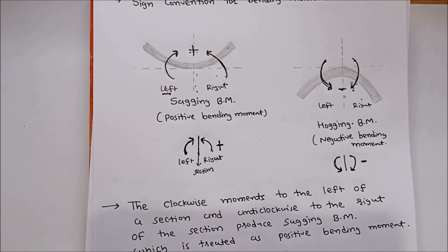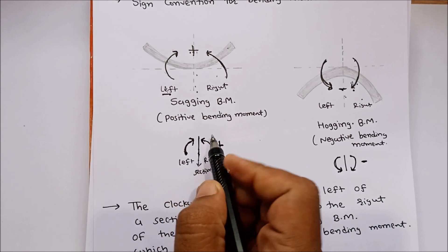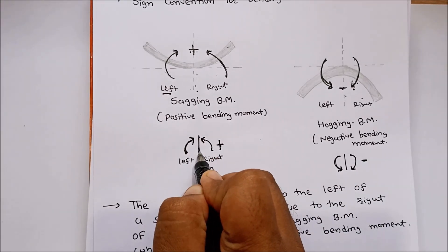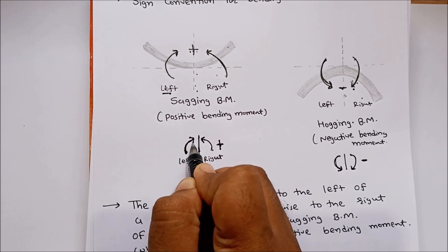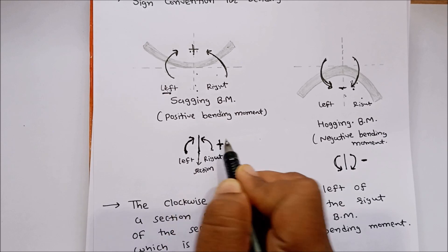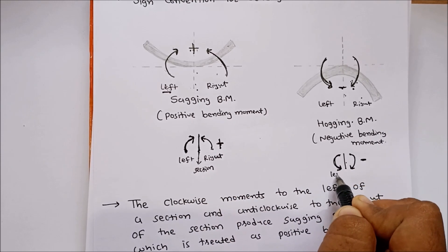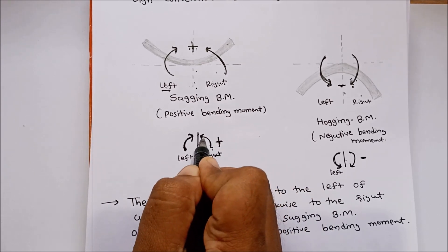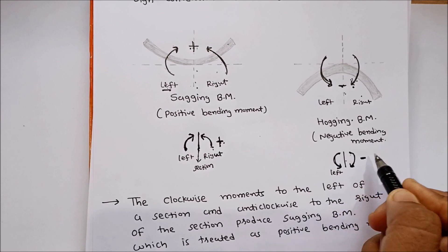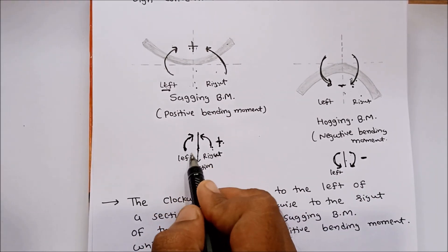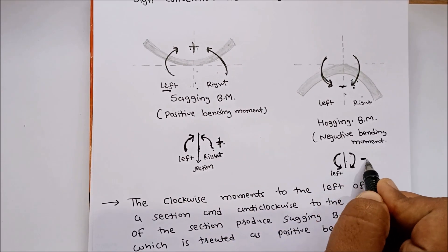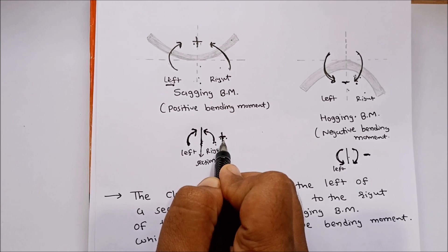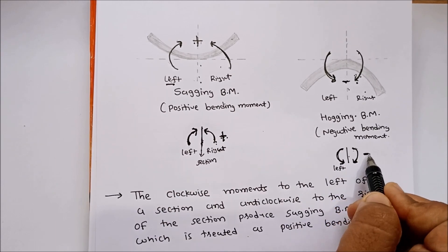So the sign convention for bending moment: sagging is positive and hogging is negative. If we take moment from the left side of a section, clockwise moment is positive and anticlockwise is negative. If we take moment from the right side of a section, anticlockwise is positive and clockwise is negative.